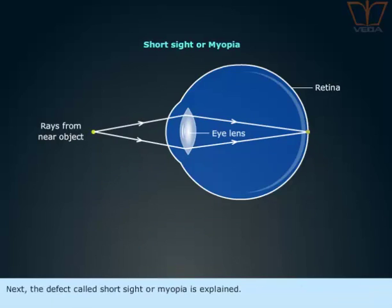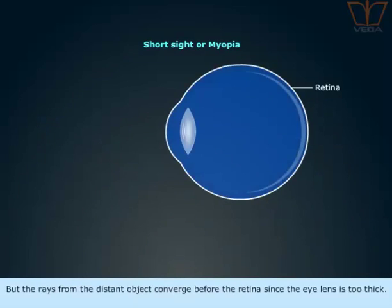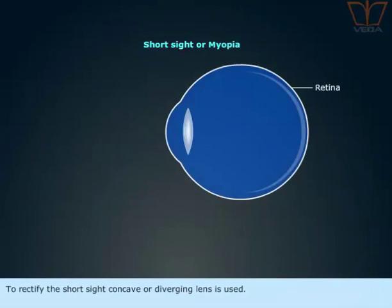Next, the defect called short sight or myopia is explained. In this case the rays from the nearer object converge on the retina, but the rays from the distant object converge before the retina since the eye lens is too thick. To rectify short sight, a concave or diverging lens is used.